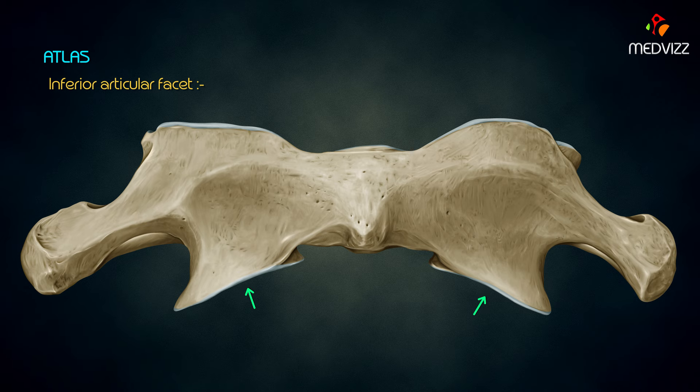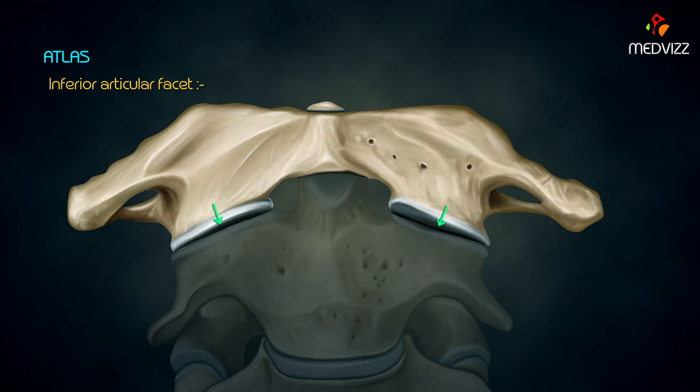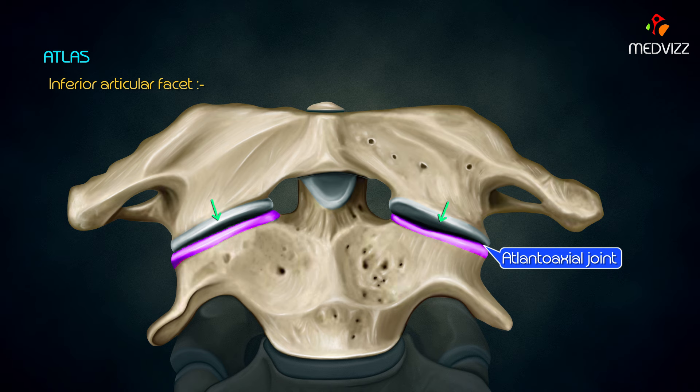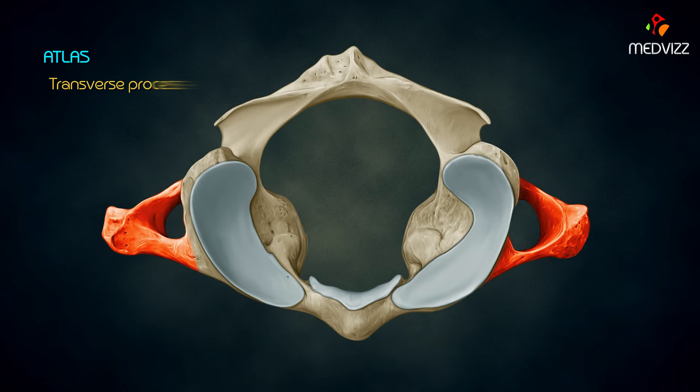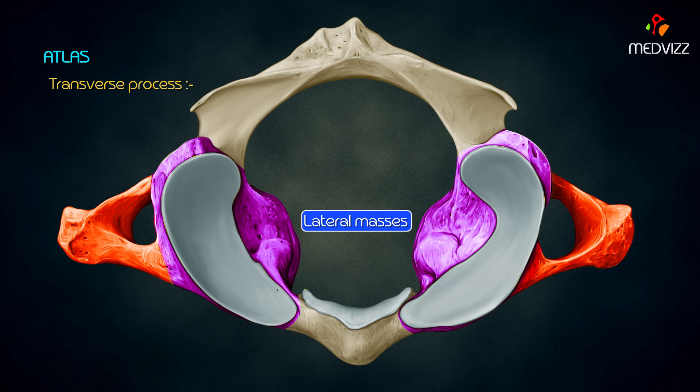The inferior articular facet is present on the lower surface of the lateral mass and is directed downwards, medially, and backwards. It articulates with the corresponding facet on the axis vertebra to form the atlanto-axial joint.